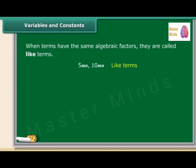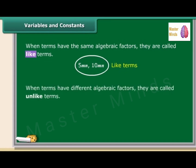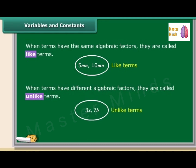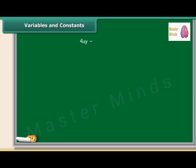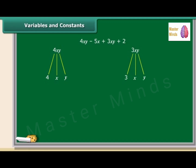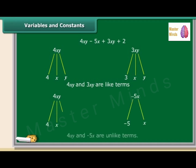When terms have the same algebraic factors they are called like terms, and when terms have different algebraic factors they are called unlike terms. In the expression 4XY − 5X + 3XY + 2, the terms 4XY and 3XY both have factors X and Y, so they are like terms. On the other hand, 4XY and −5X have different algebraic factors, so they are unlike terms.